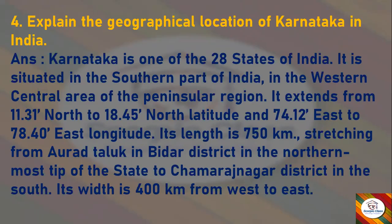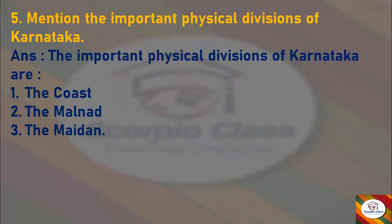Karnataka is located in the western-central area of the peninsular region. It extends from 11.31 degrees North to 18.45 degrees North latitude and 74.12 degrees East to 78.40 degrees East longitude. Its length is 750 kilometers, stretching from Urat Taluk in Bidar District in the northernmost tip to Chamarajanagar District in the south. Its width is 400 kilometers from west to east.